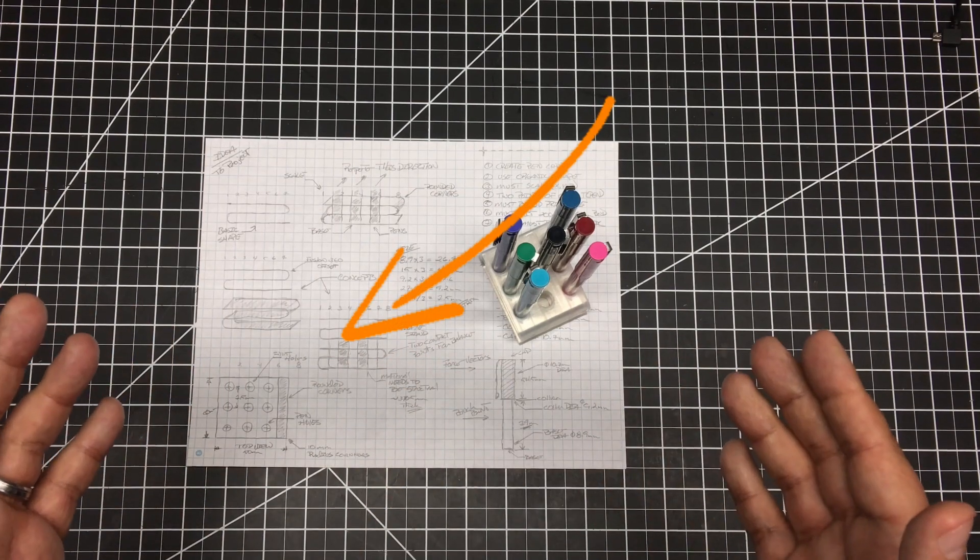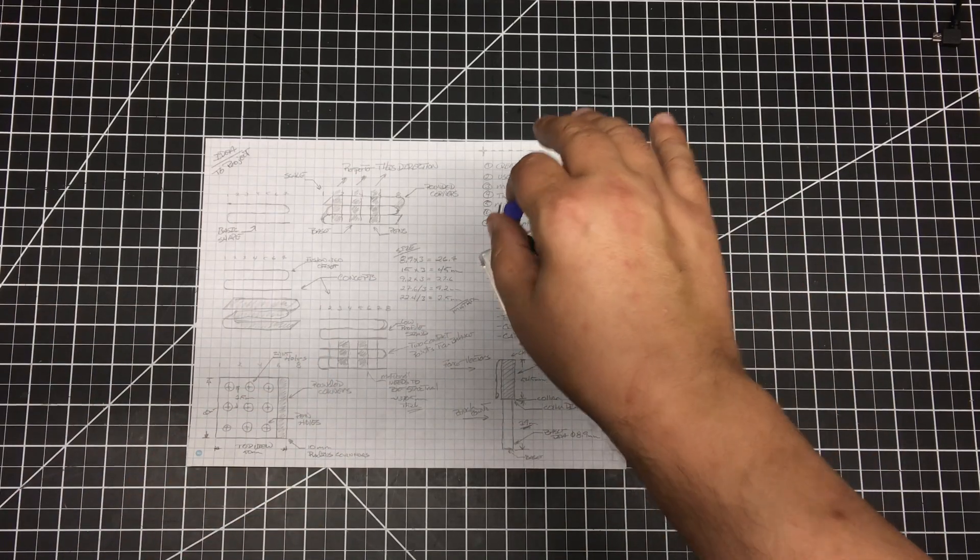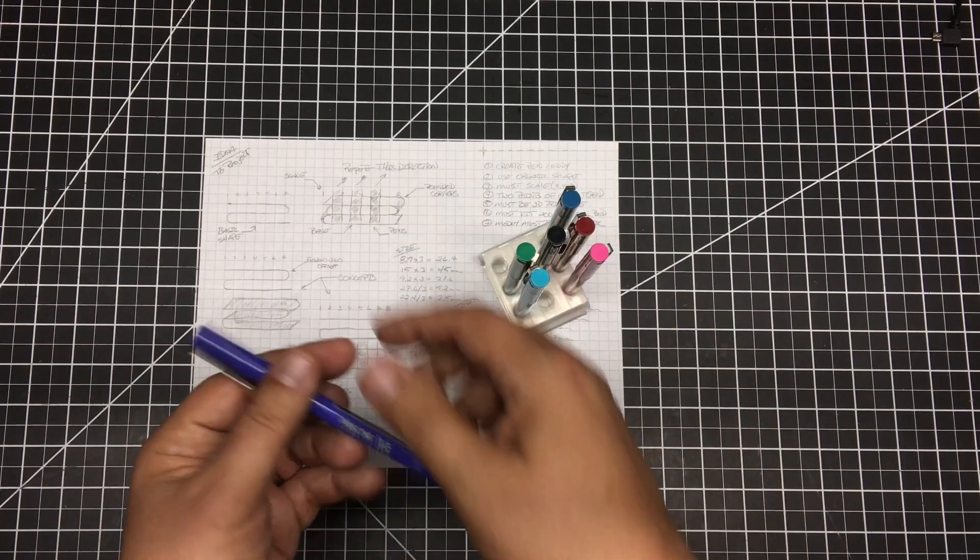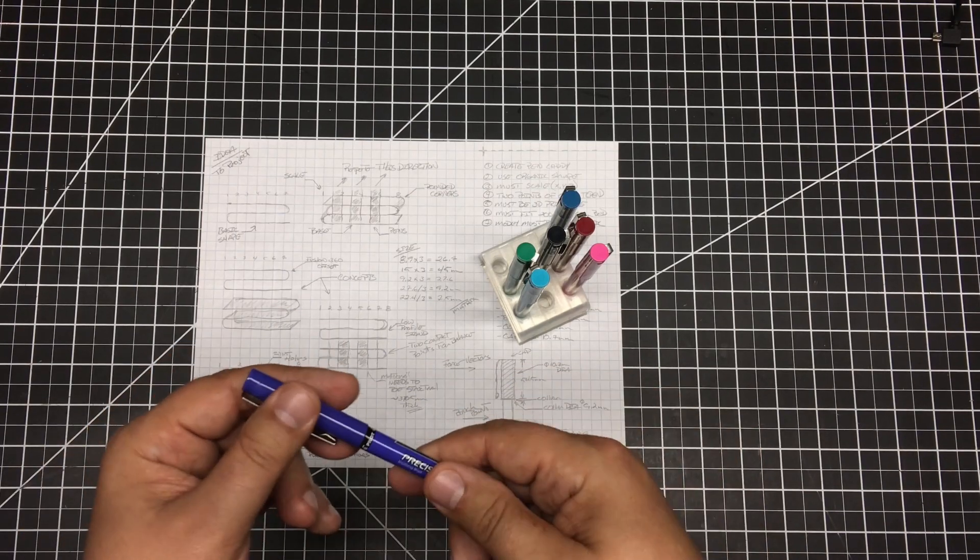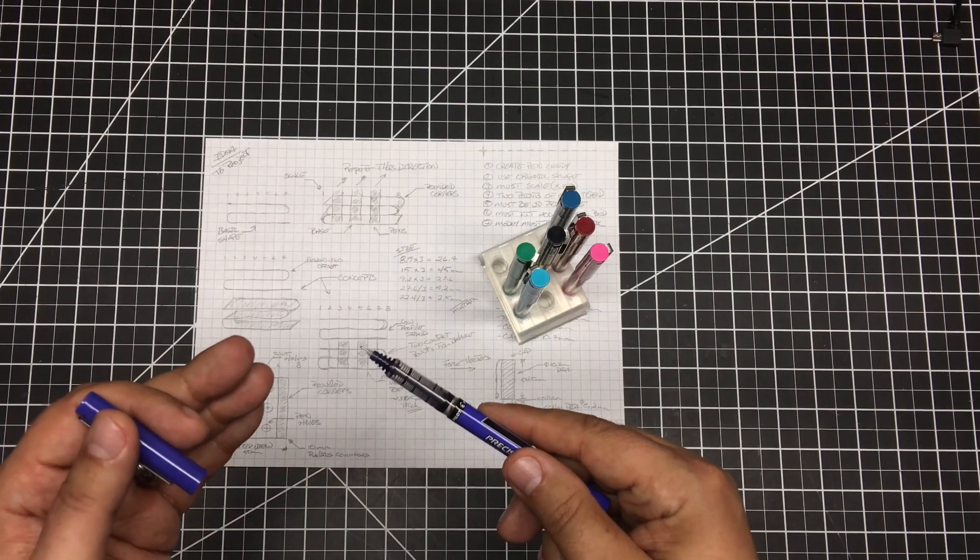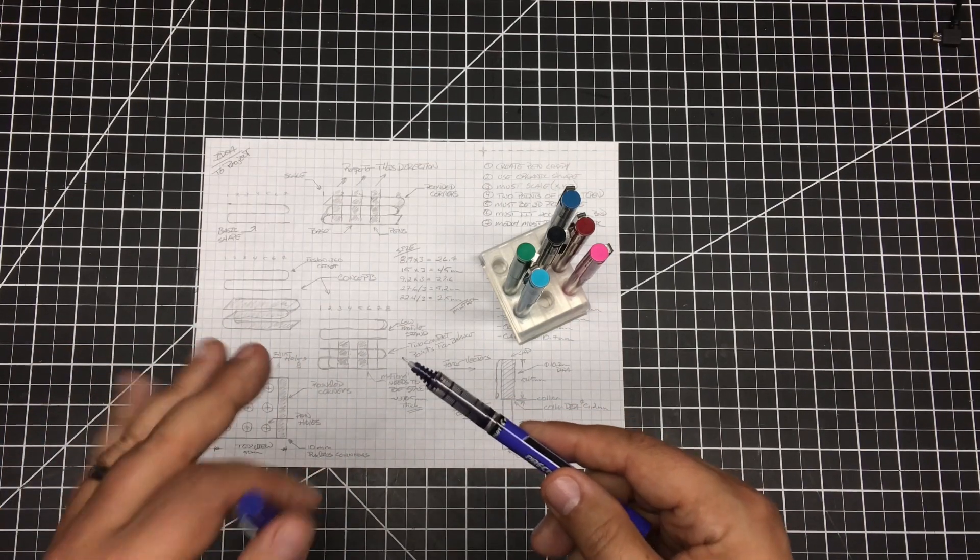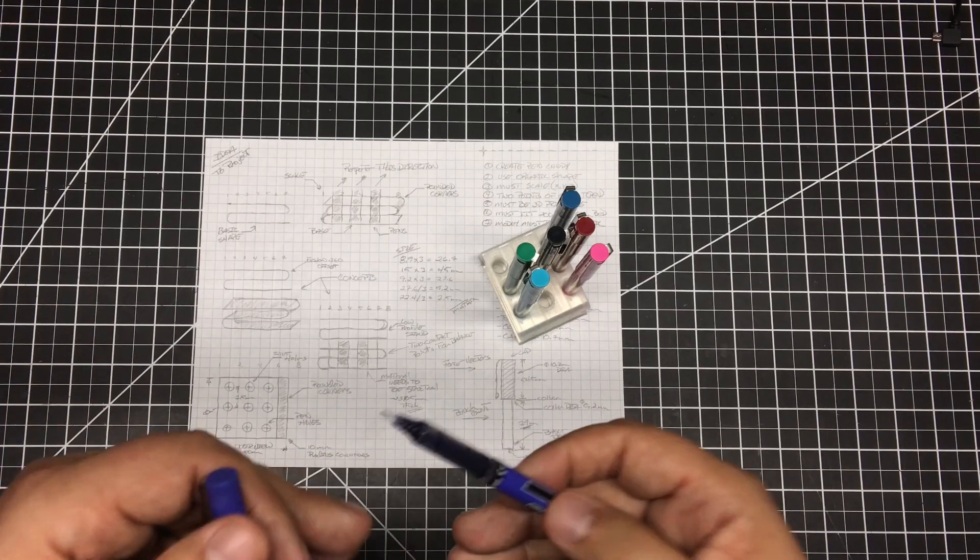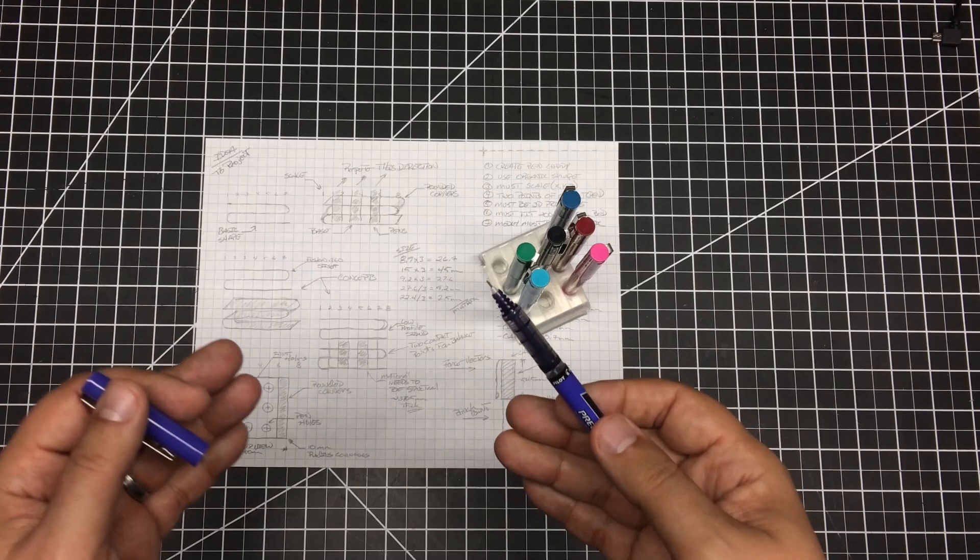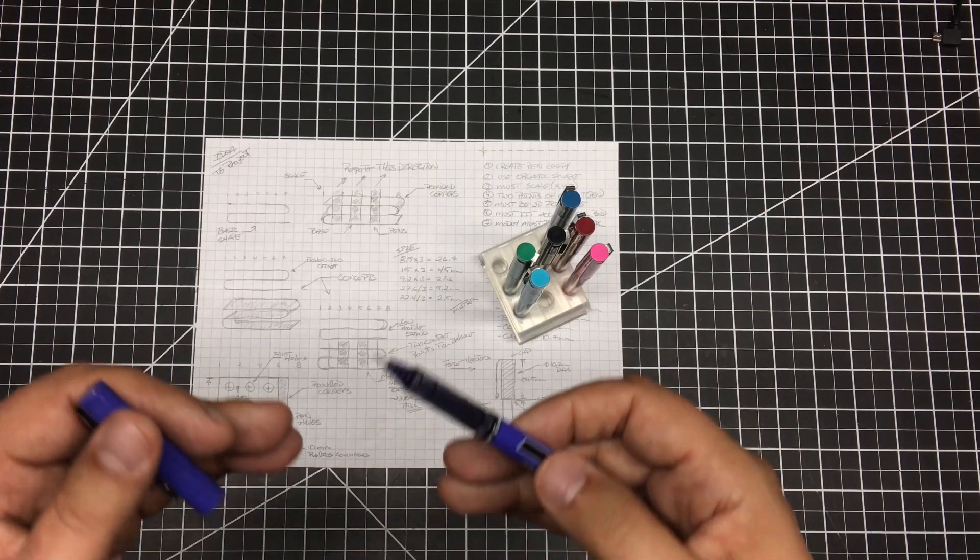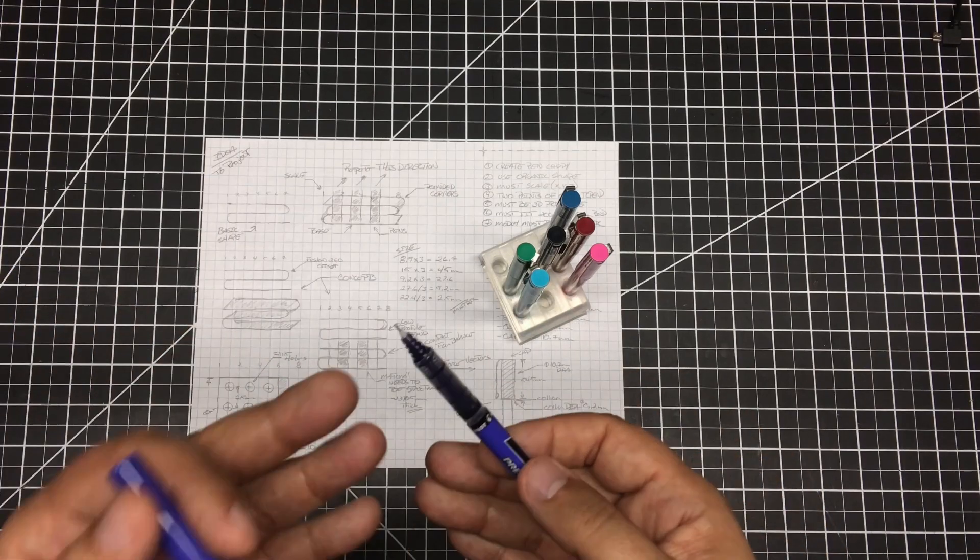To do that, I like to use either a pen or a pencil. One of my favorite pens is the Pilot Precise series here, and one of the reasons I like these, I'll have a link to these down below, is it comes with a very fine tip, very little bleed through, however, very smooth on the paper, and that's what's critical.